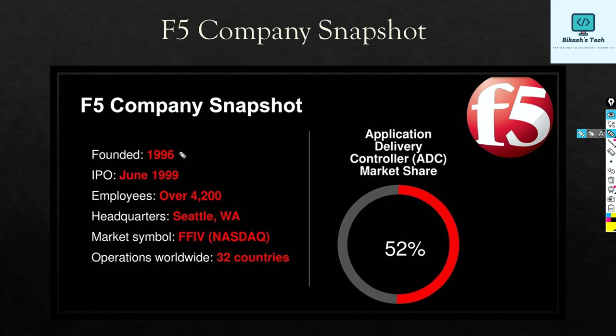F5 Networks was founded in 1996, the headquarters is in Seattle, and currently it is operating in 32 countries.